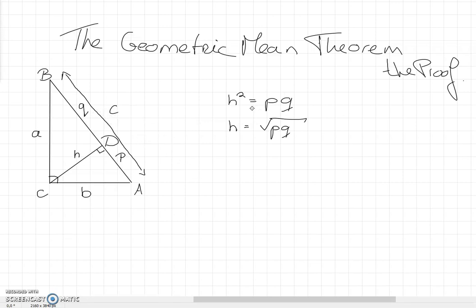In order to prove the geometric mean theorem, which says that the altitude squared is the same as p times q, we make a few observations. First of all,